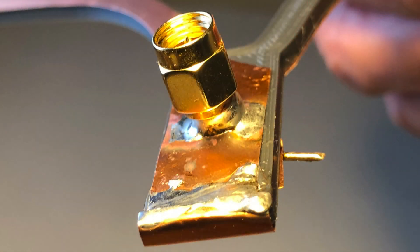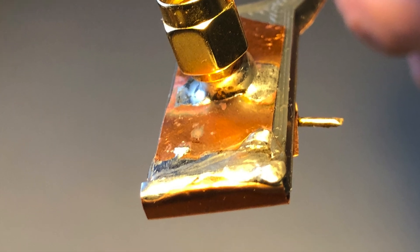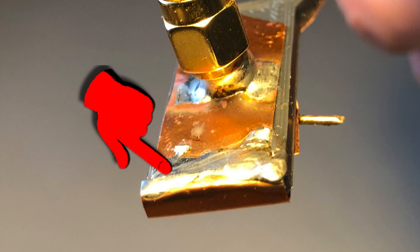I soldered an SMA connector directly to the copper sheet. The antenna actually consists of two parts that I soldered together here. You need to solder the parts together before you glue them onto the frame, because the PLA material cannot tolerate the heat.